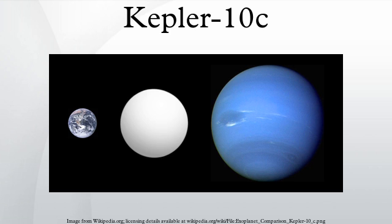Attempts to measure the radial velocity effects of this object, now named KOI072.02, were fruitless. Therefore, to rule out false positive scenarios, the Kepler team used a technique called Blender. The application of Blender was supplemented by use of the IRAC instrument on the Spitzer Space Telescope, which was used on August 30 and November 15, 2010, to further define Kepler-10's light curve at the point where KOI072.02 appeared to transit it.